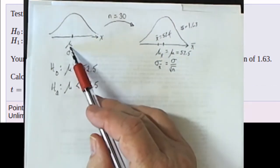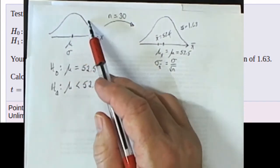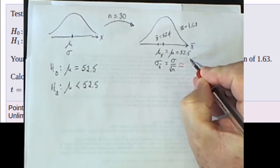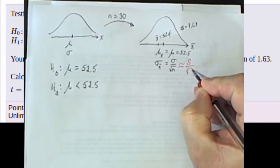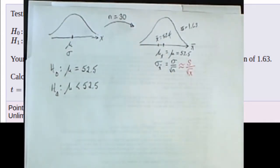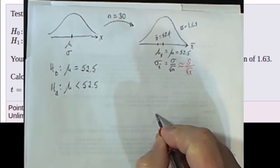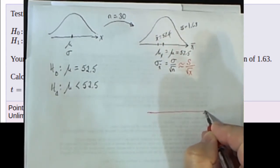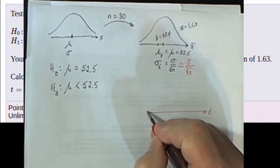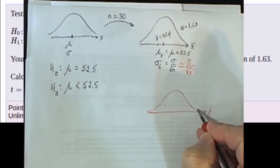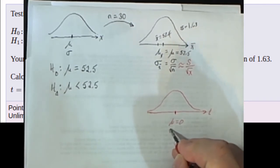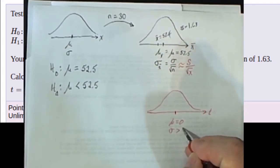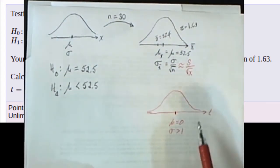Because we seldom know the population standard deviation, we approximate it by taking the sample standard deviation divided by the square root of n. Because we're making that approximation, our distribution is going to be a t-distribution instead of a z-distribution. The t-distribution looks a lot like a standard normal — it has a mean of 0 — but its standard deviation is greater than 1, depending on the sample size.